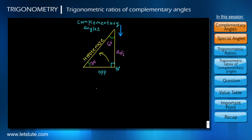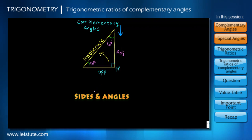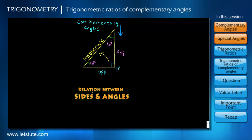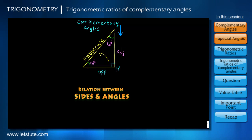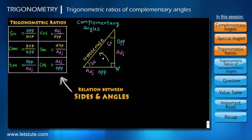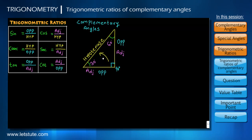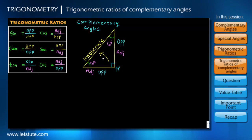So now we are aware of the sides and angles. In our previous session, we also learned the relation between the sides and angles in trigonometry, which is known as trigonometric ratios. Today we are going to learn the relation between the trigonometric ratios of complementary angles.